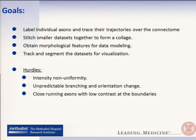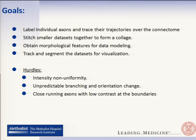The main hurdle we faced was intensity non-uniformity — the single most biggest hurdle. The axons would not express similar intensity; they would have drastic changes in intensity over very short lengths, which means we would see neurons appear and disappear randomly in the data set. There was also unpredictable branching and orientation change, and we had very close-running axons which looked like they were touching together, making it hard to manually differentiate between them.